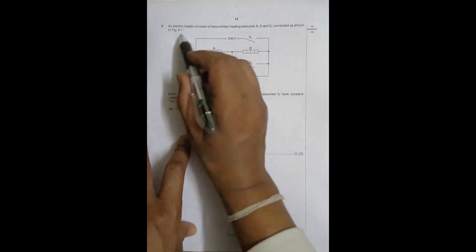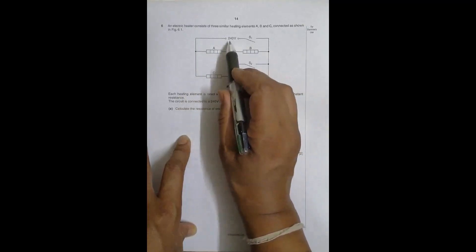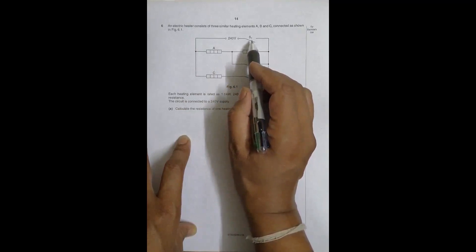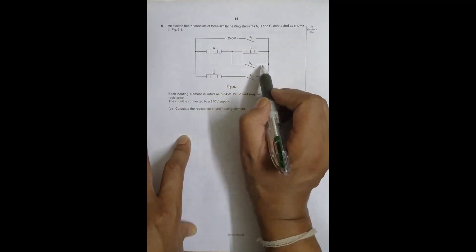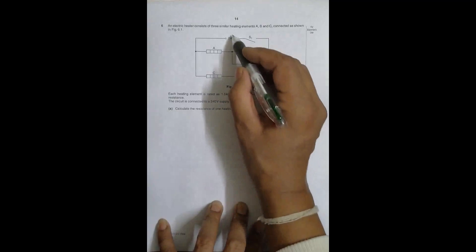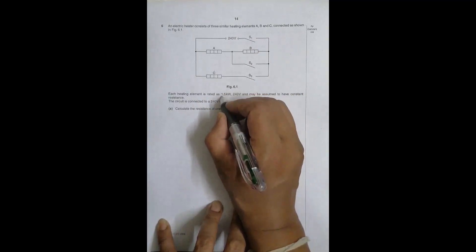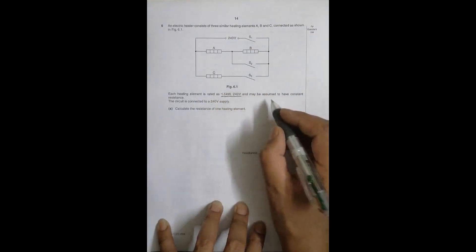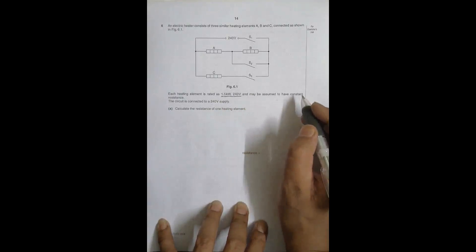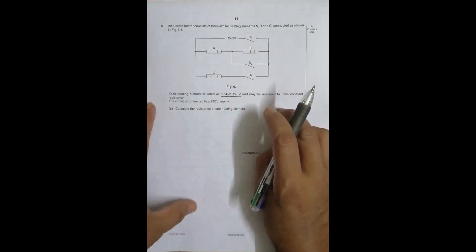It says an electric heater consists of three similar heating elements A, B, and C connected as shown in figure 6.1. We have A and B in series; the whole arrangement is across this voltage source and is controlled by switch S1. S2 can be switched on or off to include or exclude B in the circuit. C is there across this resistor, controlled by switch S3. Each heating element is rated at 1.5 kilowatt, 240 volts, and may be assumed to have constant resistance. The circuit is connected to a 240 volt supply.